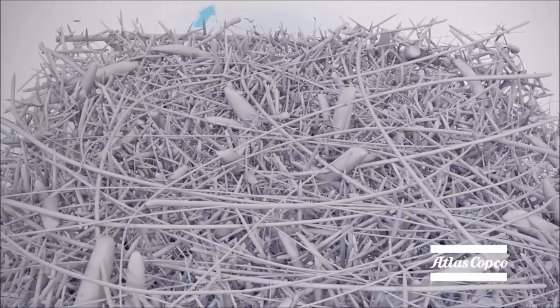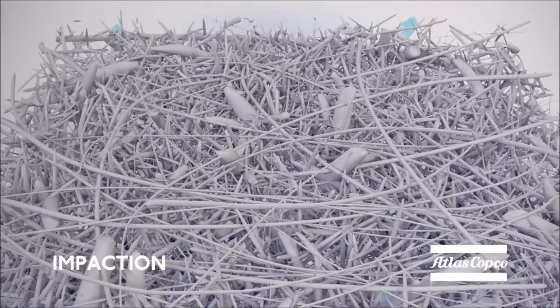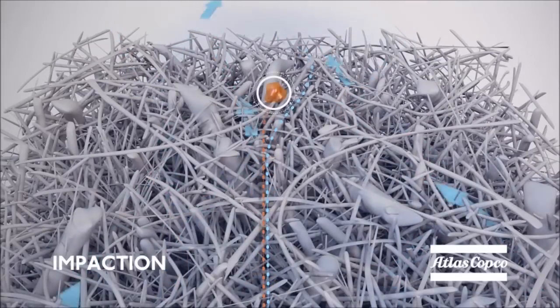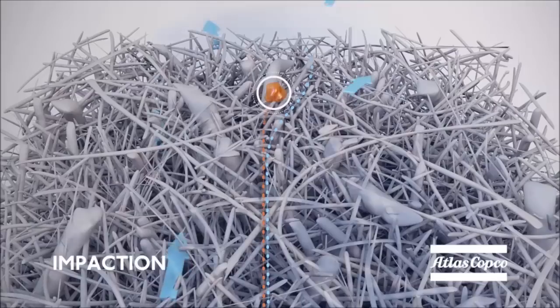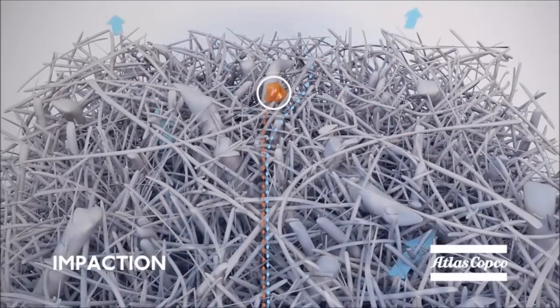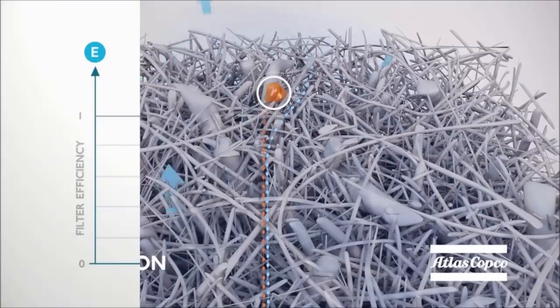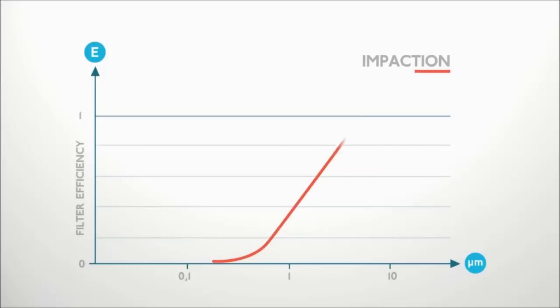The first mechanism is inertial impaction. The unclean air flows through the filter media, but the heavier particles don't follow the gas flow streamlines because of their large inertia. Instead, they travel along a straight path until they collide with a fibre and are thus removed from the air. Impaction becomes more important with increasing particle size.